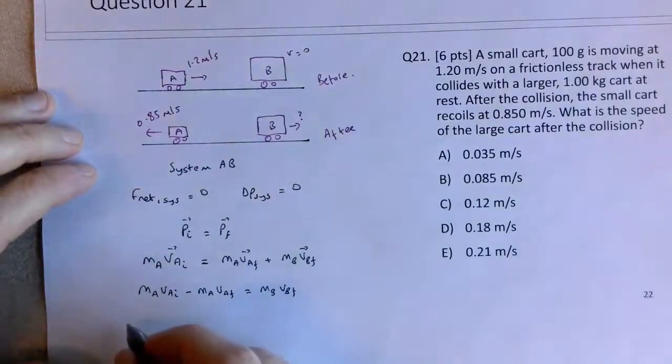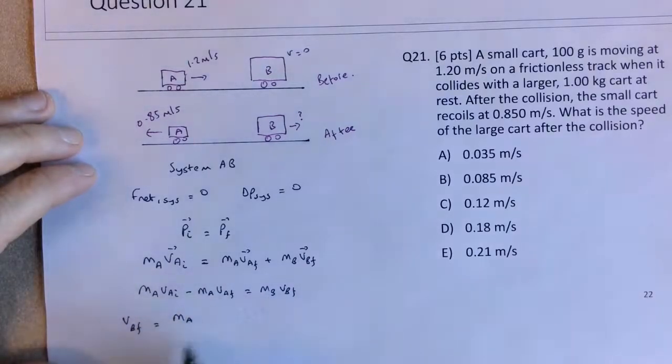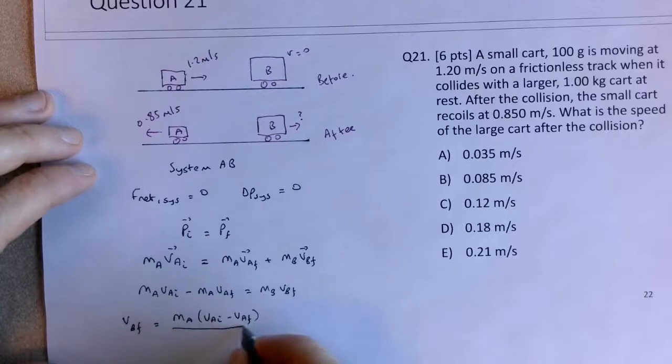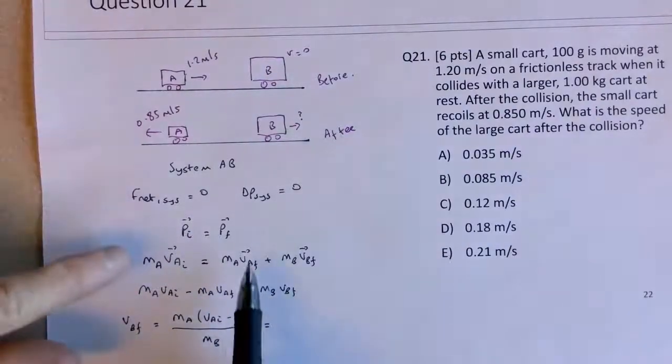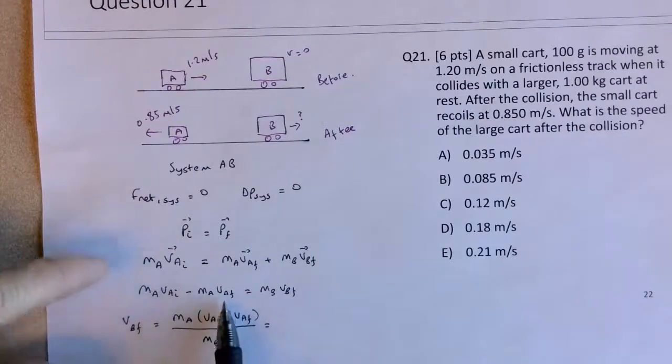And then the final velocity of B would be M_A, I can take out, I'm going to eventually divide across by M_B, but I can also take out this M_A term, V_A initial minus V_A final, and I'll divide it by M_B.